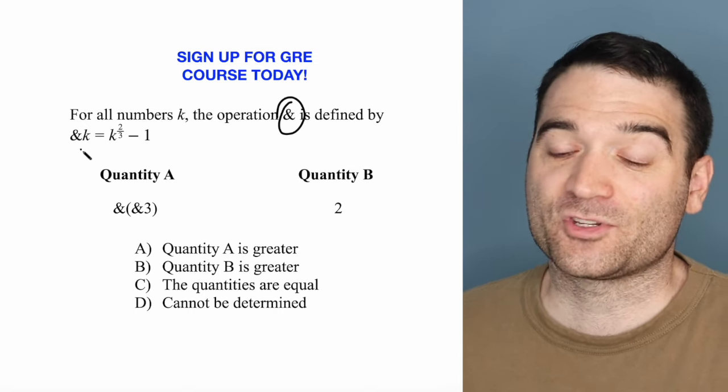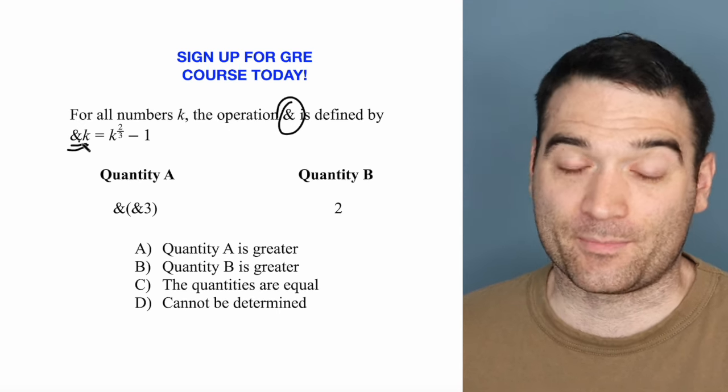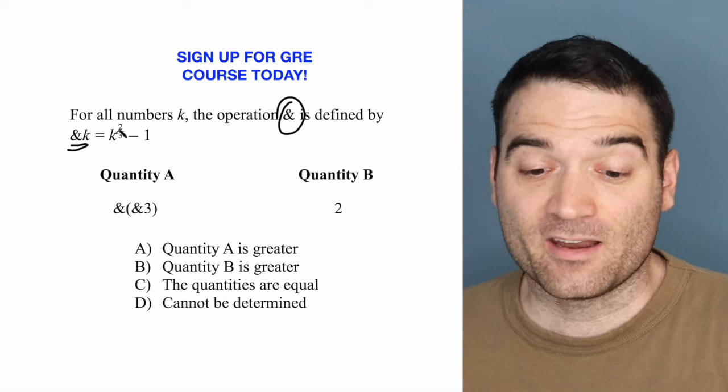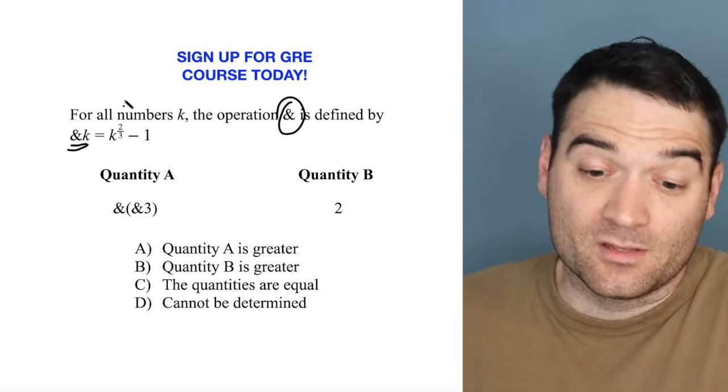What does the ampersand mean? It means that when we take ampersand some number, so ampersand k, we're going to take that number k, raise it to the power of two-thirds, and subtract one.